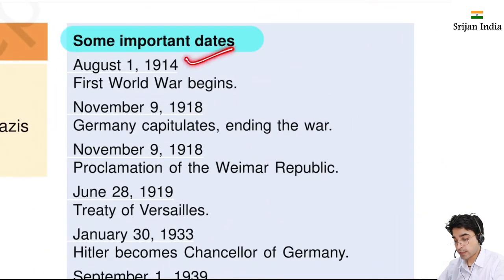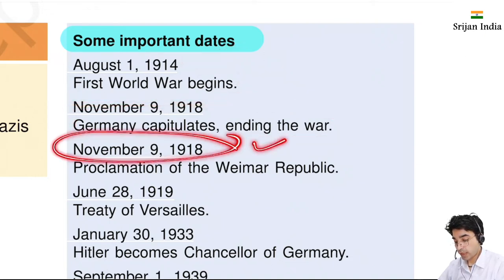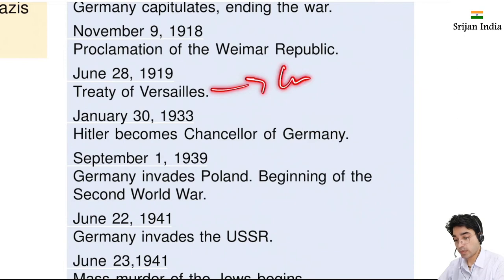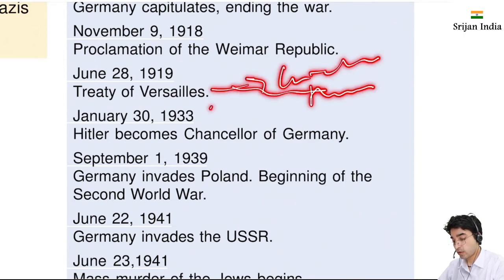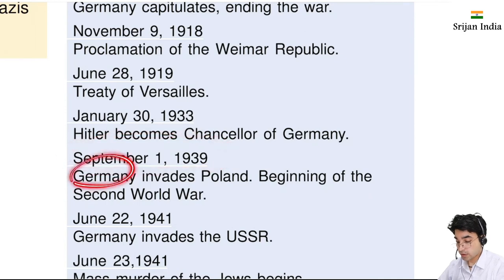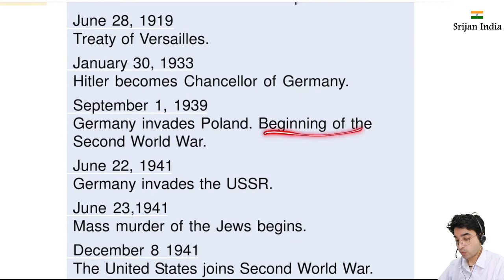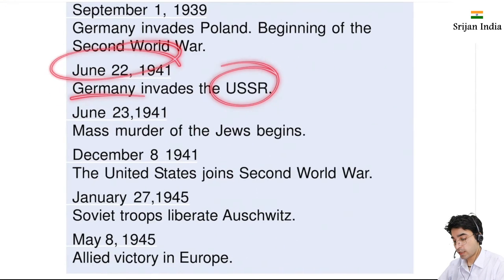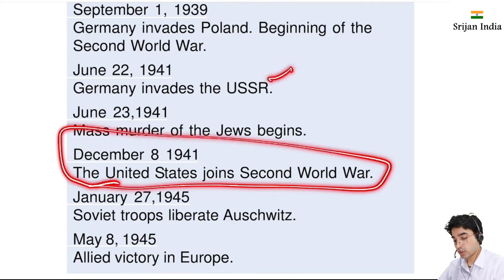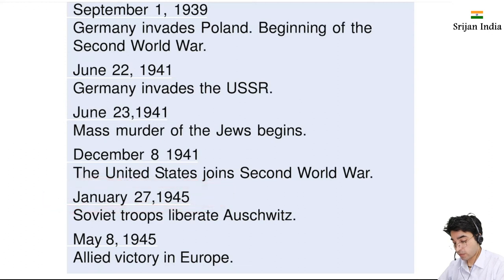Some important dates: August 1, 1914 - World War I began. November 9, 1918 - Germany capitulates, ending the war. November 9, 1918 - Weimar Republic proclaimed, though it was fragile. June 28, 1919 - Treaty of Versailles signed; Germany suffered great hardships and humiliation, which fueled the rise of nationalism. In 1933 Hitler became Chancellor of Germany. September 1939 - Germany invaded Poland, triggering World War II. In 1941 Germany invaded the USSR. Also in 1941 there was mass murder. In 1941 the United States joined the war after Japan attacked Pearl Harbor. In 1945 Soviet troops liberated Auschwitz. May 8, 1945 - Allied victory in Europe.